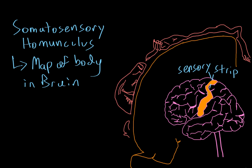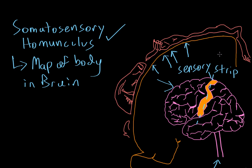If we take a cross-sectional look at the sensory strip — cutting the brain right down the middle — we see this large orange structure, which is the sensory strip viewed from that angle. The sensory strip contains the somatosensory homunculus, meaning information from your hand will end up in one part of the sensory strip. Information from your fingers comes here, information from the palm comes here, information from your wrist ends up here. Similarly, information from your foot synapses over here, and information from your toes synapses here.